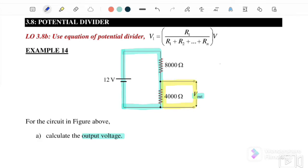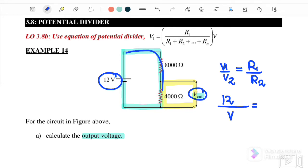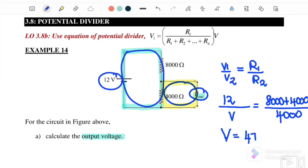We know that the equation for the potential divider is V1 over V2 equals R1 over R2, where V1 here, referring to the blue color loop, is 12 volt, and V2 is the output voltage that we want to find. R1 is the total resistor involved in the blue color loop, which is 8,000 plus 4,000. R2 is the yellow color resistor, which only involves 4,000 ohm. Therefore, V output that we will get equals 4 volt.